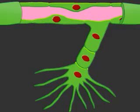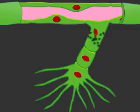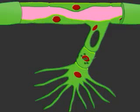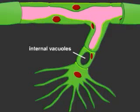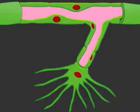The sprout begins to hollow out, forming a tube. In this process, pinocytic vesicles fuse with one another. The large vacuoles formed in this way then fuse with one another, creating a lumen that runs through the capillary sprout.